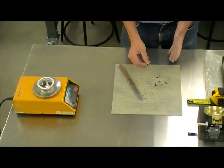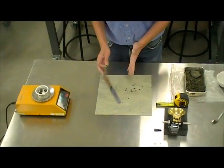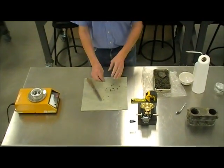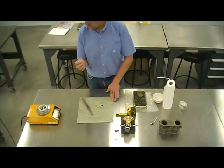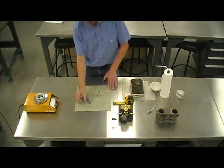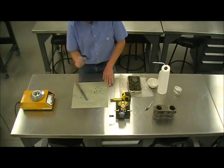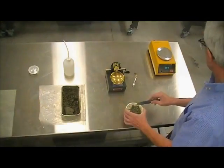The plastic limit then is the average water content in the condition where we were able to roll the material to a one-eighth of an inch thread for a length of one inch without crumbling.